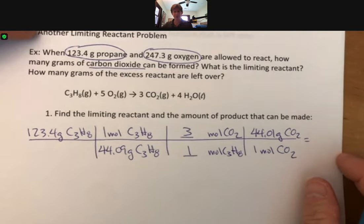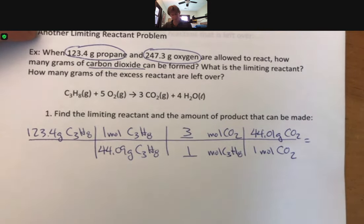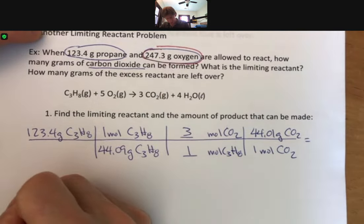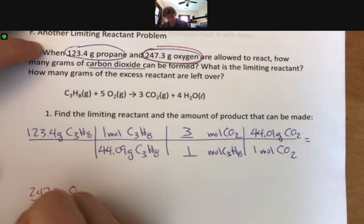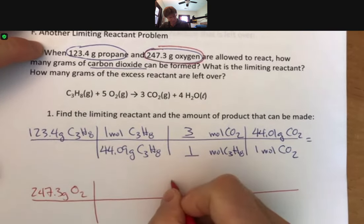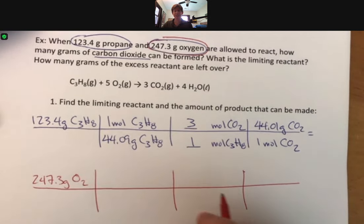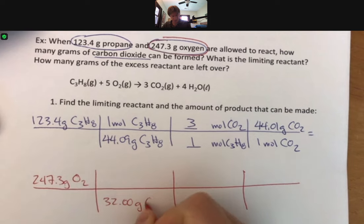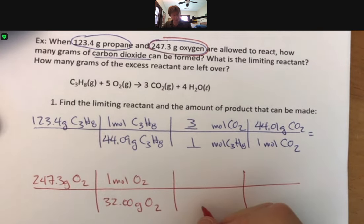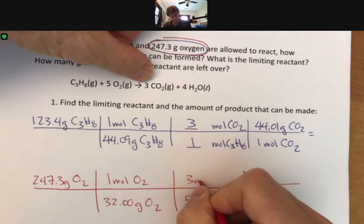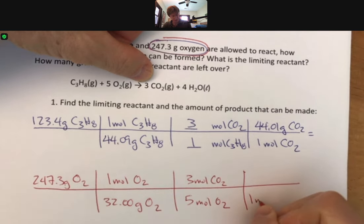I have one for propane, I have three for carbon dioxide. And then last but not least is the molar mass of carbon dioxide, which we've done before in this lecture video too. So that's the first one. Let me go ahead and set up my other one. This is going to involve the 247.3 grams of O₂. We have grams of oxygen, we want to go to moles of oxygen.